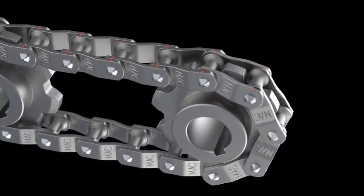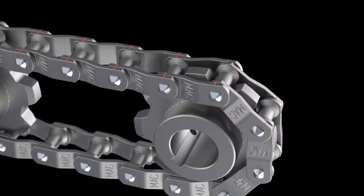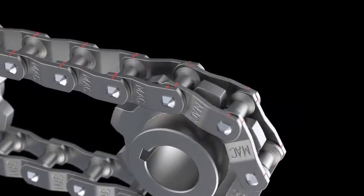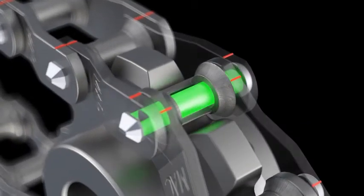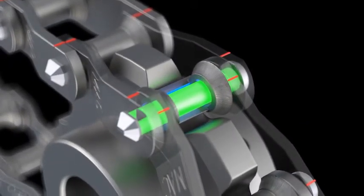When welded steel offset chain is installed to run wide end forward and the link engages onto the sprocket tooth, the chain link barrel enters onto the sprocket tooth and the articulation occurs between the rivet OD and the barrel ID.